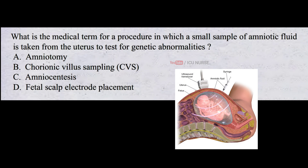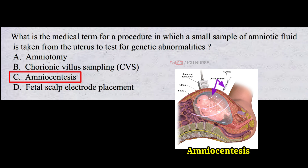What is the medical term for a procedure in which a small sample of amniotic fluid is taken from the uterus to test for genetic abnormalities? A. Amniotomy. B. Chorionic villus sampling. C. Amniocentesis. D. Fetal scalp electrode placement. And the correct answer is C. Amniocentesis. Amniocentesis is a medical procedure used to diagnose certain genetic and chromosomal disorders in a developing fetus. A small amount of amniotic fluid is extracted from the amniotic sac and analyzed for abnormalities. It is usually performed in the second trimester and carries some risks, including a small risk of miscarriage.